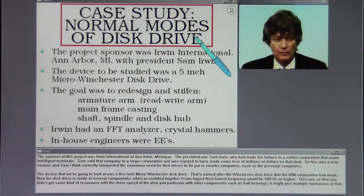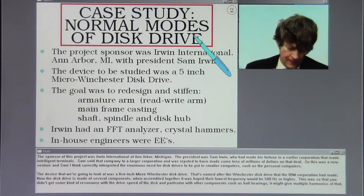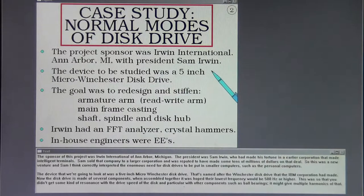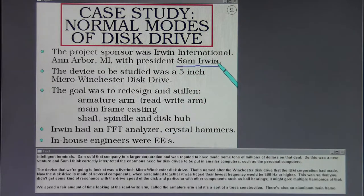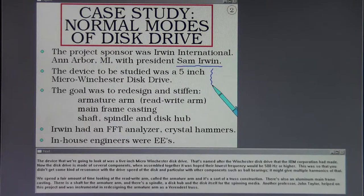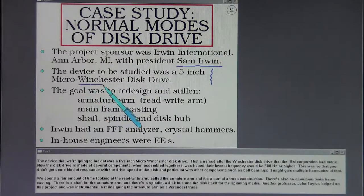The sponsor of this project was Irwin International of Ann Arbor, Michigan. The president was Sam Irwin, who had made his fortune in an earlier corporation that made intelligent terminals. Sam sold that company to a larger corporation and was reputed to have made some tens of millions of dollars on that deal. This was a new venture, and Sam correctly interpreted the enormous need for disk drives to be put in smaller computers, such as personal computers. The device we're going to look at was a 5-inch micro Winchester disk drive.